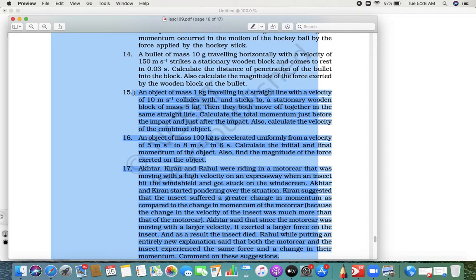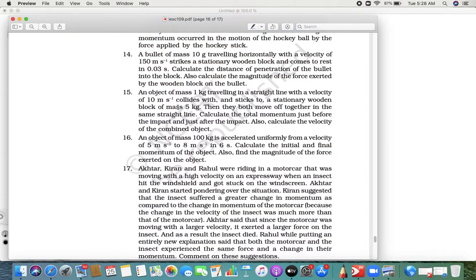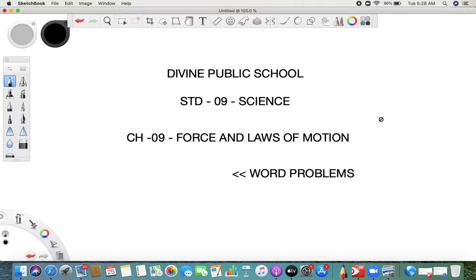If you see here, we have an object of mass 1 kg traveling in a straight line with a velocity 10 meter per second collides with a stationary wooden block of mass 5 kg. Then they both move together in a straight line, so you have to find out the combined velocity.